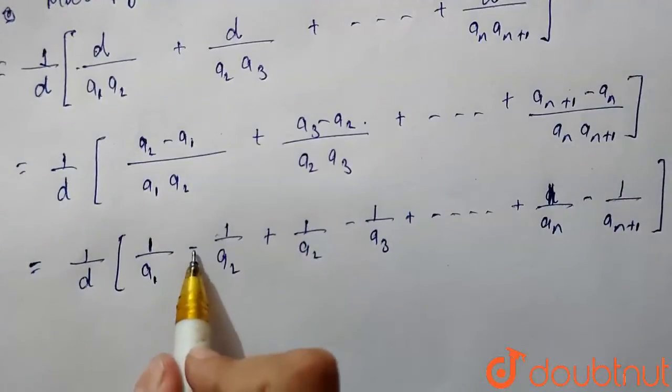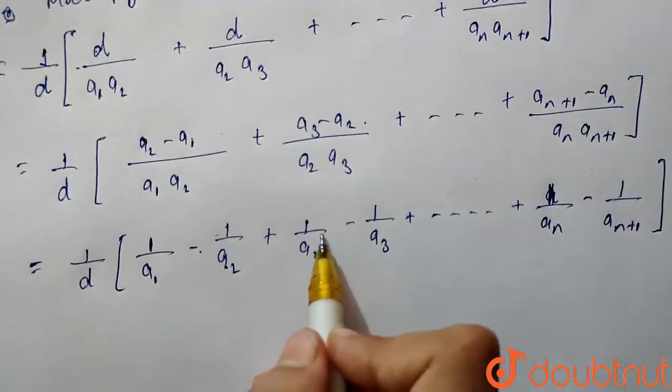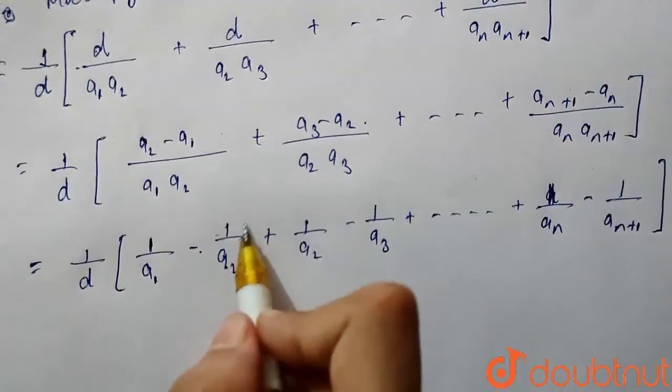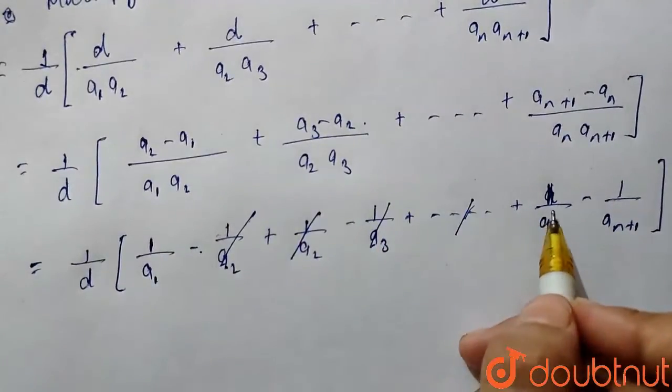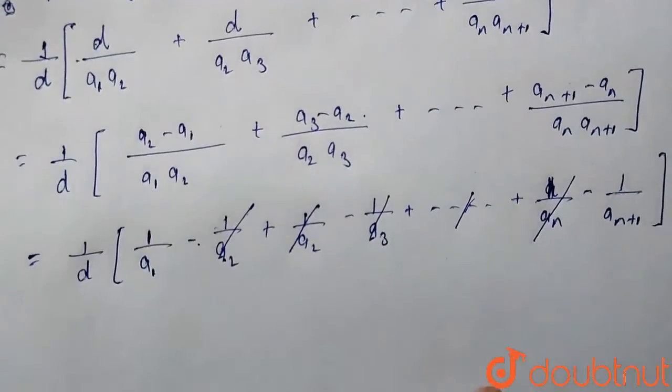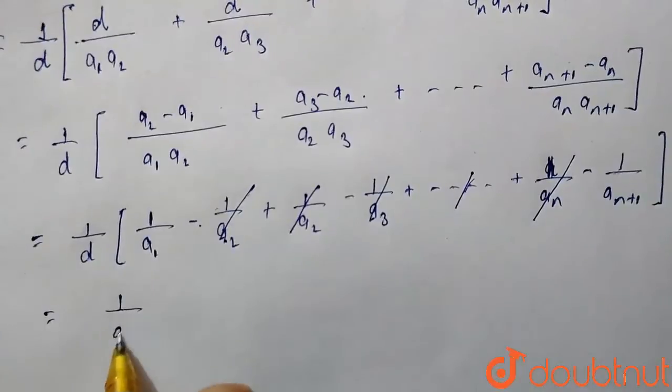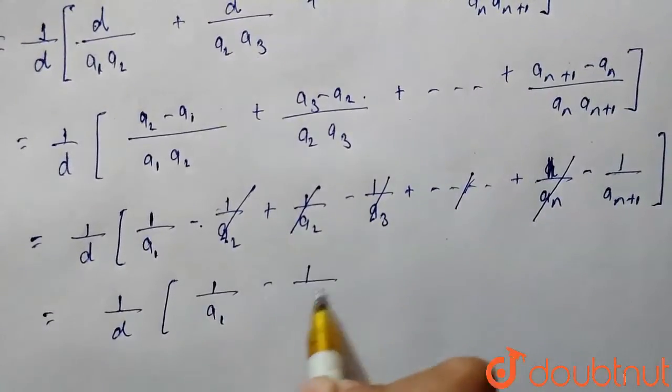As we can see that here a2 is with negative sign and here it is with positive sign. So this will cancel and similarly a3 will also cancel. Till the end, this first term will remain.